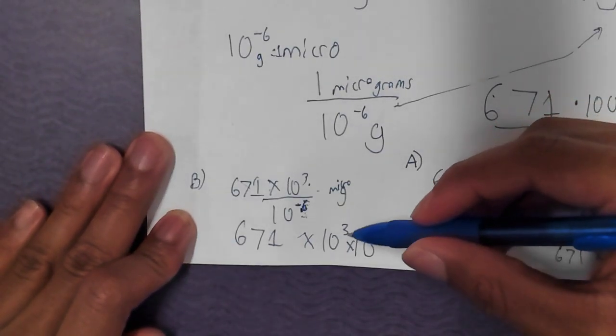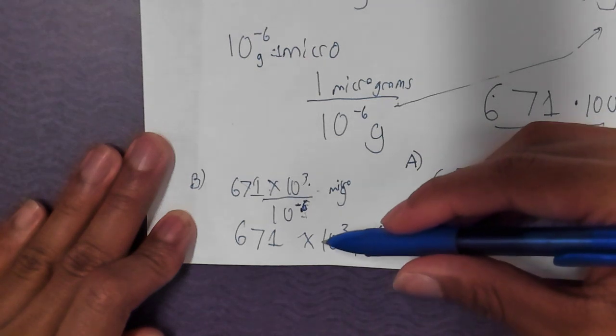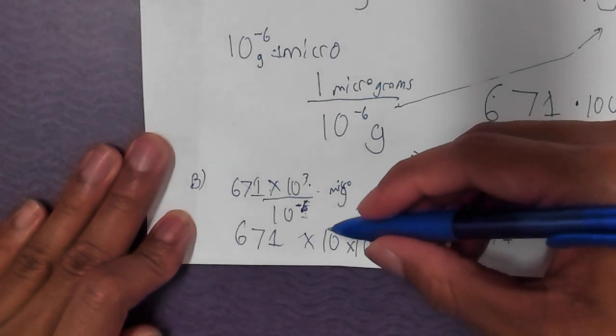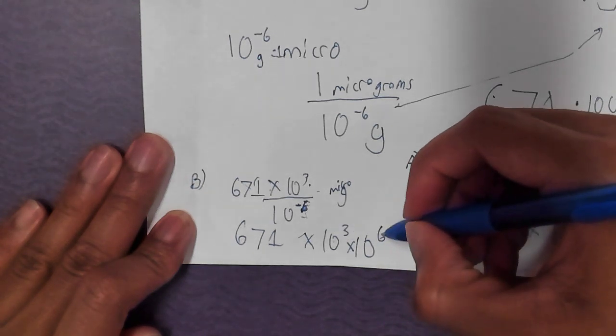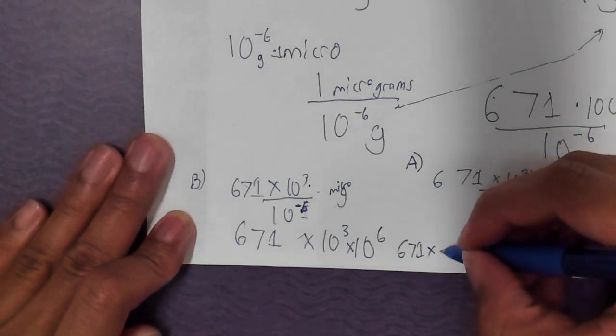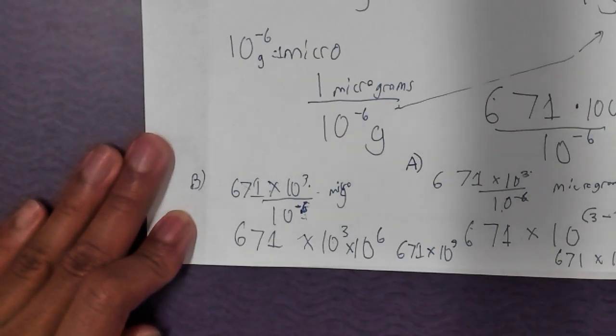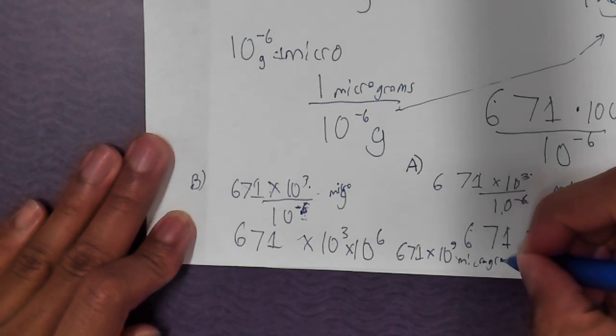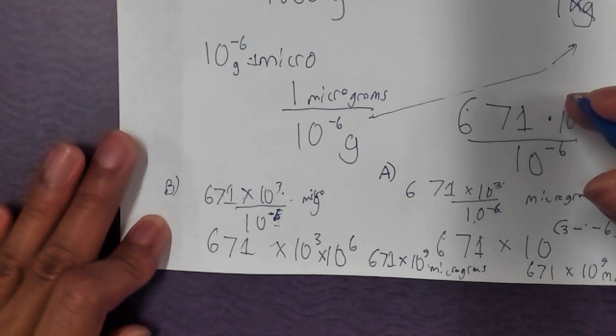The other way I was going to say is, if you just happen to remember, any time you have a negative exponent, you can simplify it just by flipping it over and turning it positive. 10 to the negative 6 is the same as just 10 to the positive 6 on top. We flipped this over and made it positive. Now it's times 10 to the positive 6 power. The rule for when you multiply two numbers that have exponents of the same base, you just add the two exponents on top. So it's 671 times 10 to the 9th power micrograms. Same exact answer we got the other method.